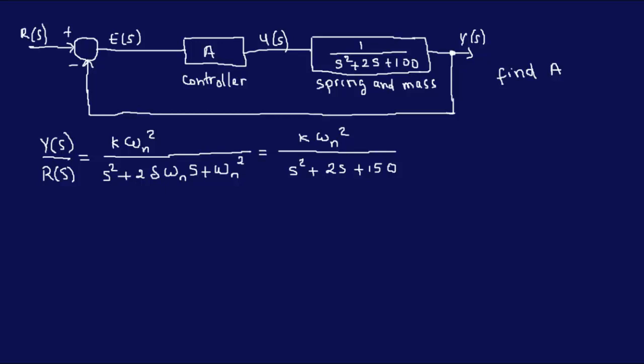This is an example problem from the actual NCEES electrical sample questions with solutions. I thought it was a good idea to post them just to get a feel of how the exam looks like. So the problem says a proportional controller with gain A is used to control a spring and mass system as shown here.